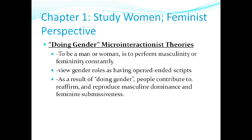Now, 'doing gender' — looking at the symbolic interactionist perspective. To be a man or woman is to perform masculinity or femininity constantly, according to micro-interactionist theories. They view gender roles as having open-ended scripts. As a result of doing gender, people contribute to, reaffirm, and reproduce masculine dominance and female submissiveness. Society reinforces gender roles to continue hegemonic masculinity — men continue to perform masculinity, and what's considered feminine is defined for women.